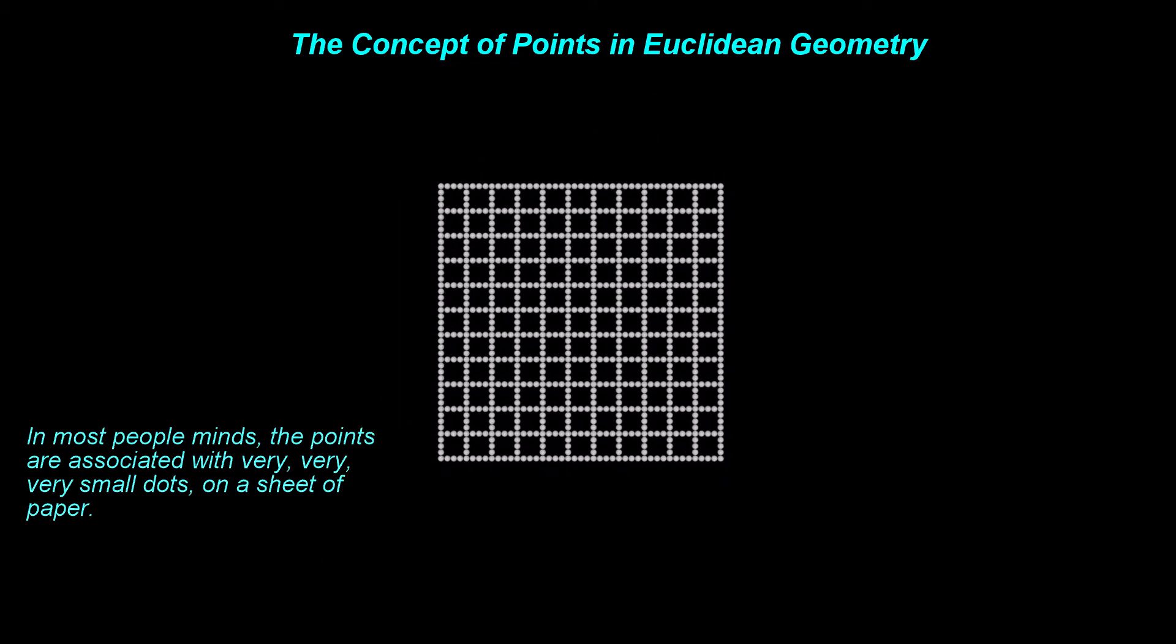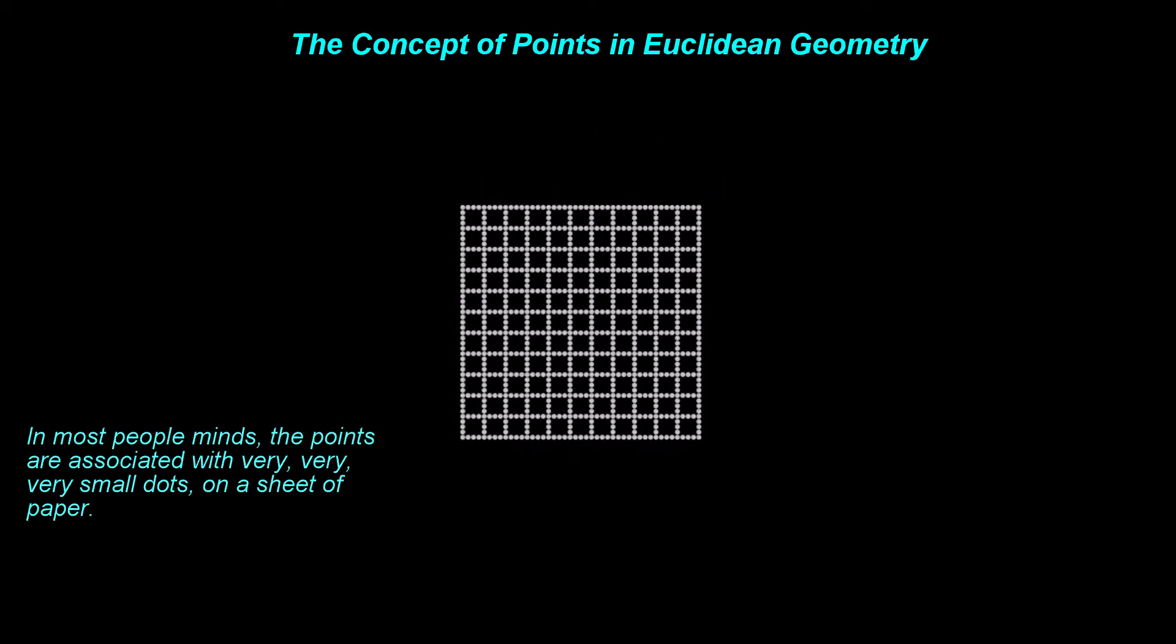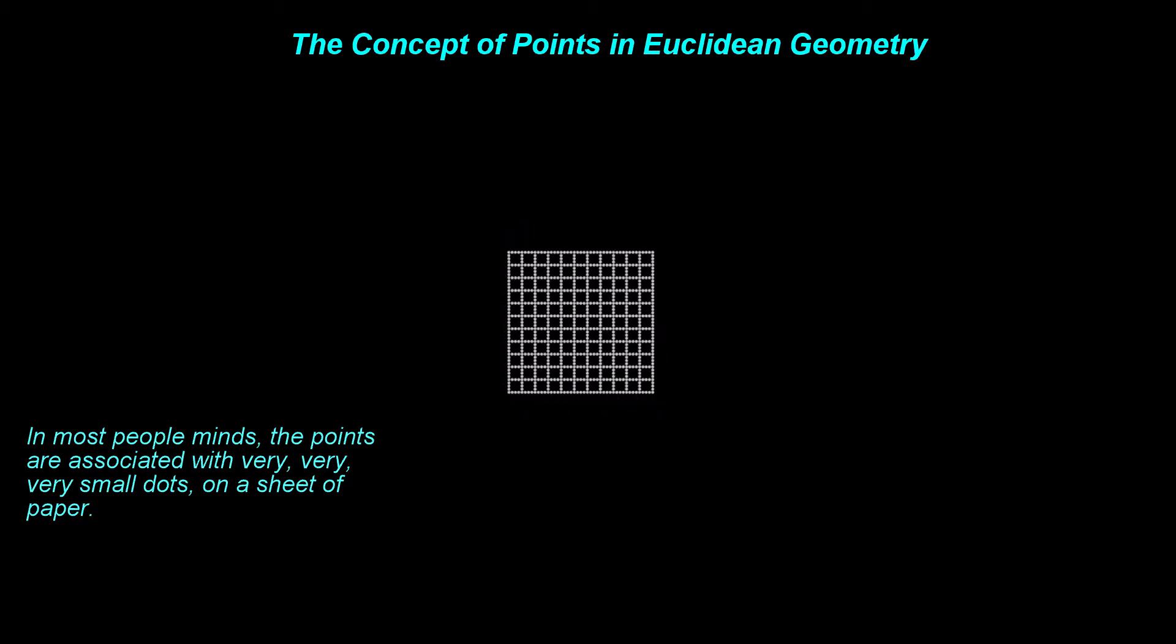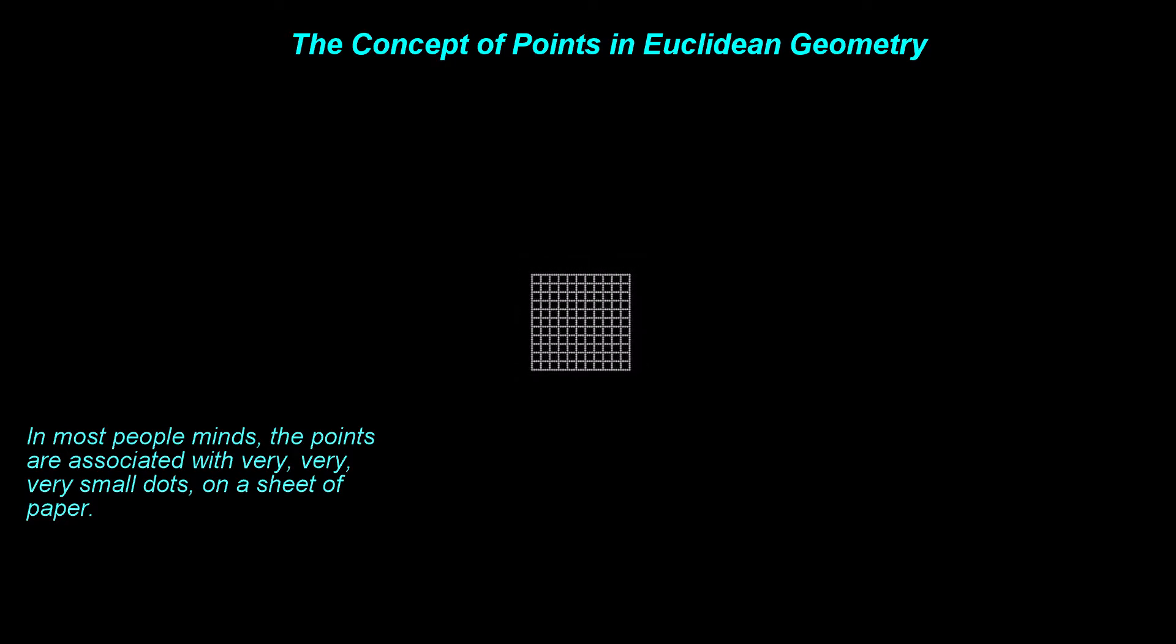In most people minds, the points are associated with very, very, very small dots, on a sheet of paper. So, the points are usually imagined as being circular. But note that this has no influence on how the Euclidean geometry is structured. The Euclidean geometry is built on the notion of nothingness.